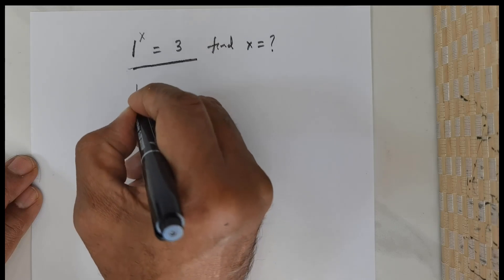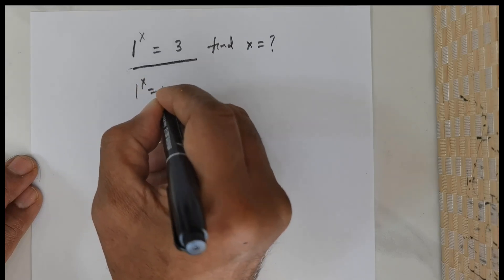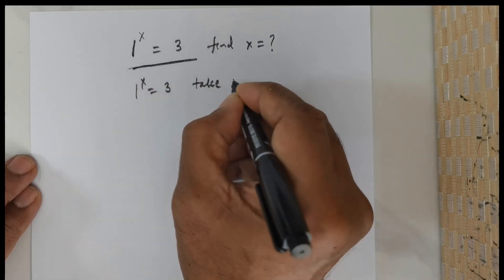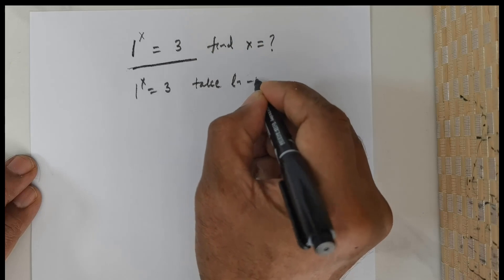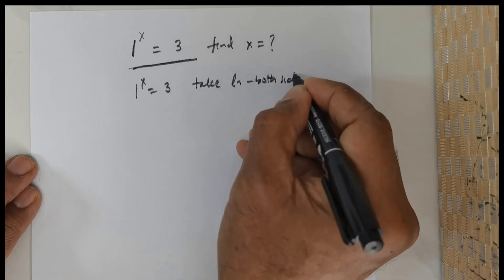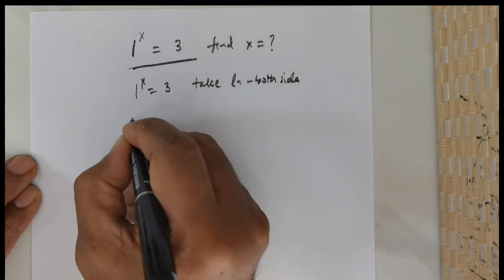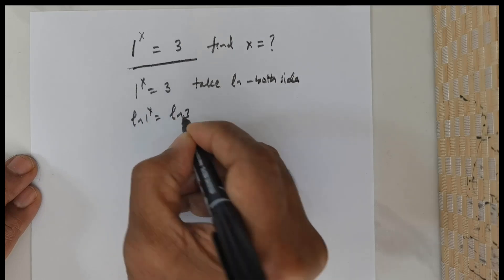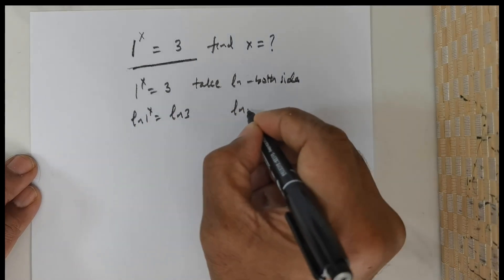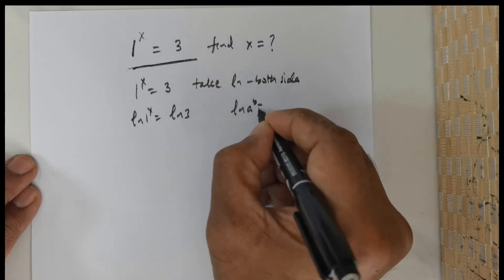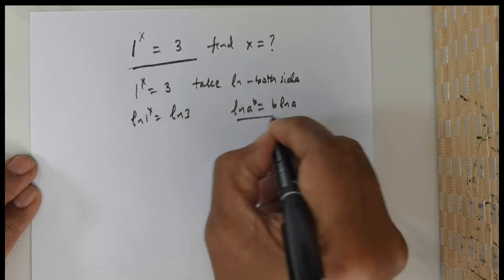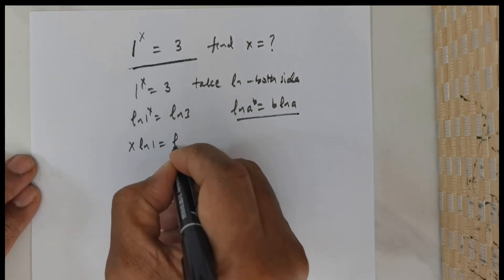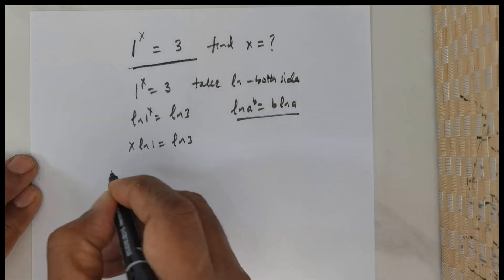So let me just consider 1 raised to the power of x is equal to 3. I am going to take log both sides. So if I were to take log both sides, I get log of 1 raised to the power of x is equal to log 3. I know that log of a raised to the power of b is equal to b times log a. So by that, this is going to be x times log 1 is equal to log 3.